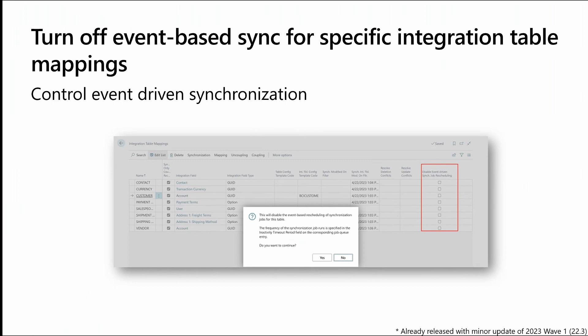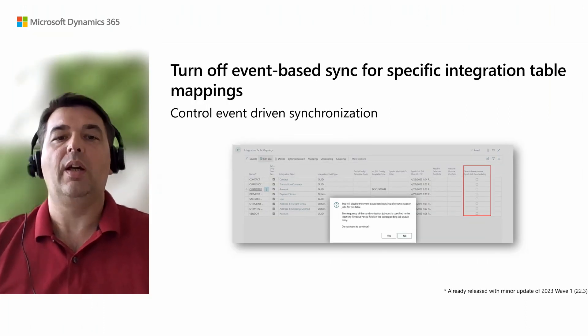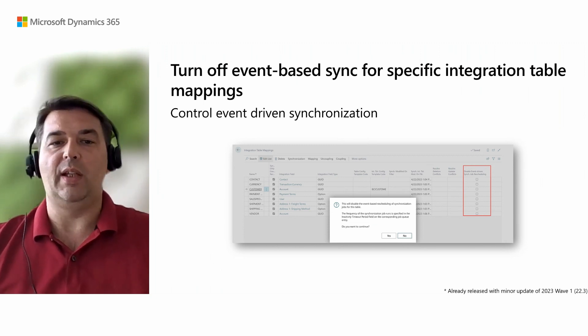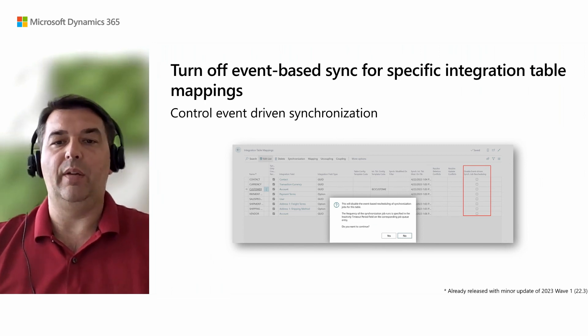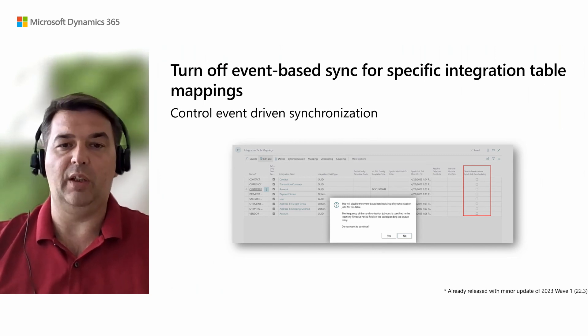Turning off event-based synchronization for specific integration table mappings gives you greater control over the flow of data between Business Central and Dataverse. For example, you can reduce the risk of data errors and inconsistencies and improve the overall quality and reliability of data. Additionally, opting out of event-based synchronization can speed up performance by reducing the number of synchronization events that Business Central needs to process. The default settings for event-based synchronization stay unchanged to avoid disrupting existing integrations.